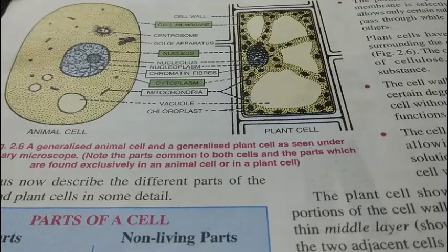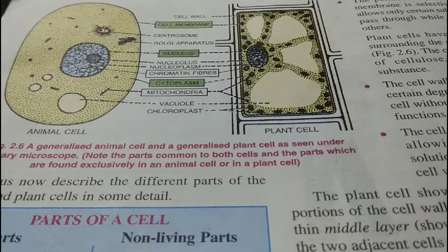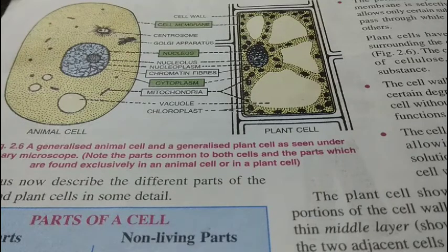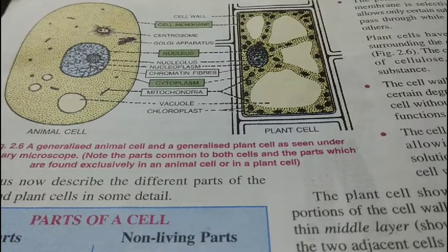The cell wall is freely permeable whereas the cell membrane is selectively permeable. The nucleus is the brain of the cell, controlling all the activities inside it. The cytoplasm carries all the cell organelles. Together, the cytoplasm and nucleus are called protoplasm — the living matter of the cell. In plant cells, this protoplasm is known as protoplast.